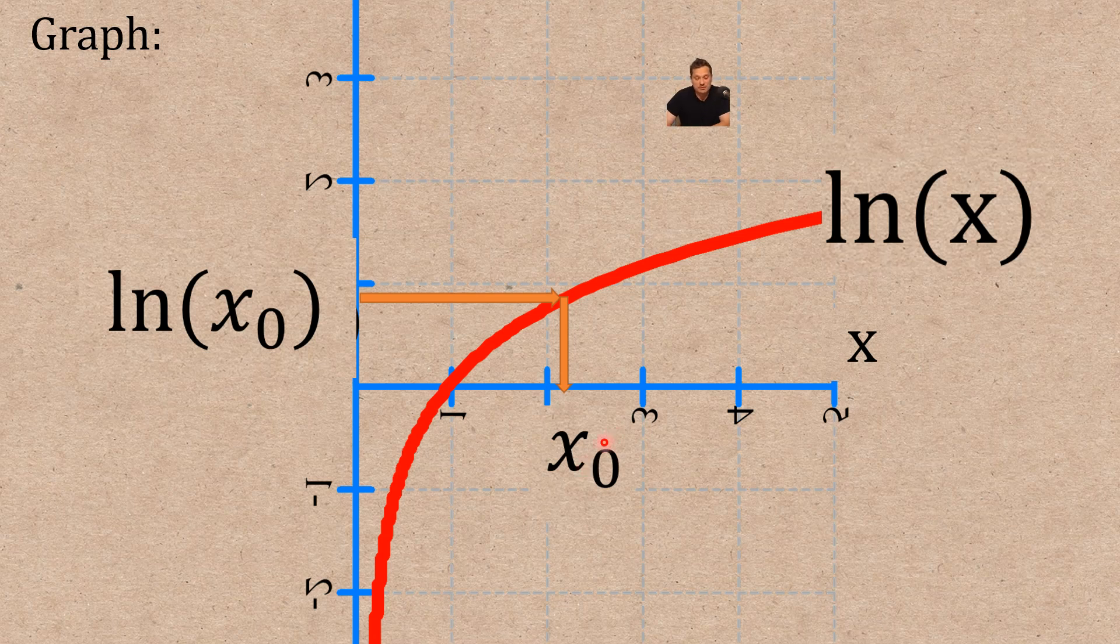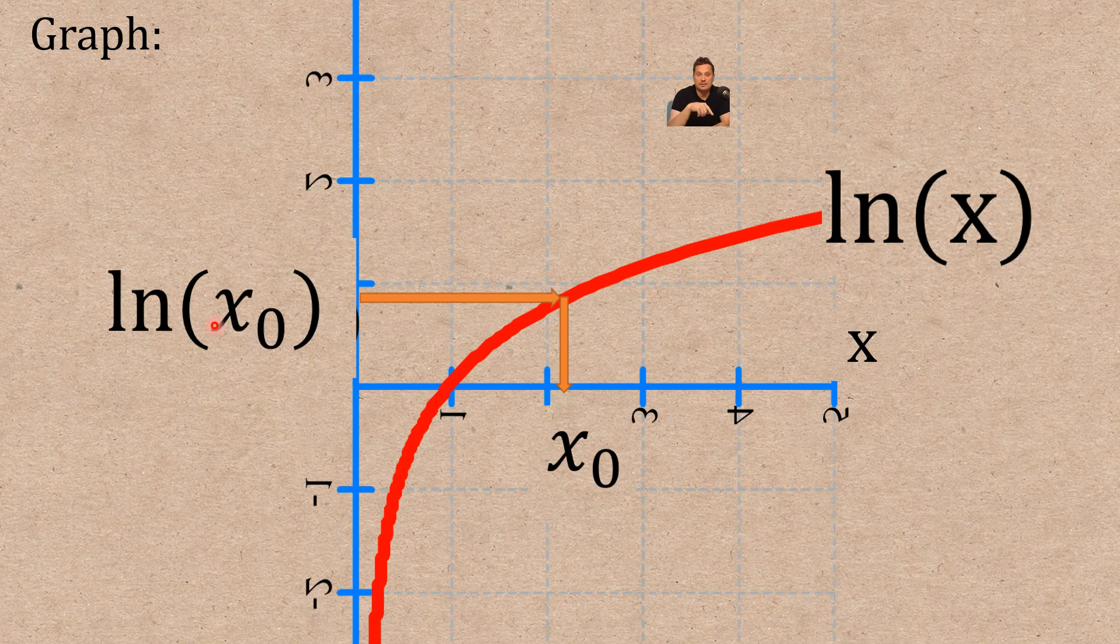And I want to stress an important point here that x sub zero is not like a particular value. ln of x is kind of like the whole curve. ln of x sub zero is a particular output. So if you know a function, you basically also know its inverse as long as instead of reading from the horizontal to the vertical, you read from the vertical back down to the horizontal. Often that works in most cases.